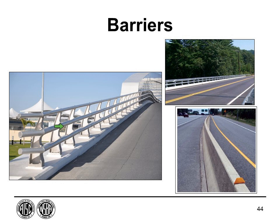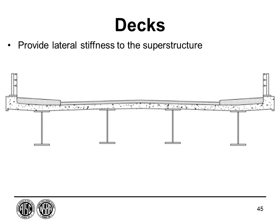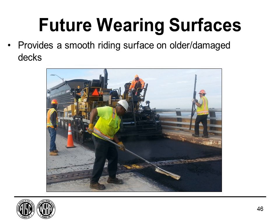Decks provide lateral stiffness to the superstructure and a riding surface for traffic. Common types include pre-cast or cast-in-place reinforced concrete or steel grid decks. A future wearing surface goes on top of the deck to provide a smooth riding surface for older or damaged structures, and this load must be included even during the initial design.